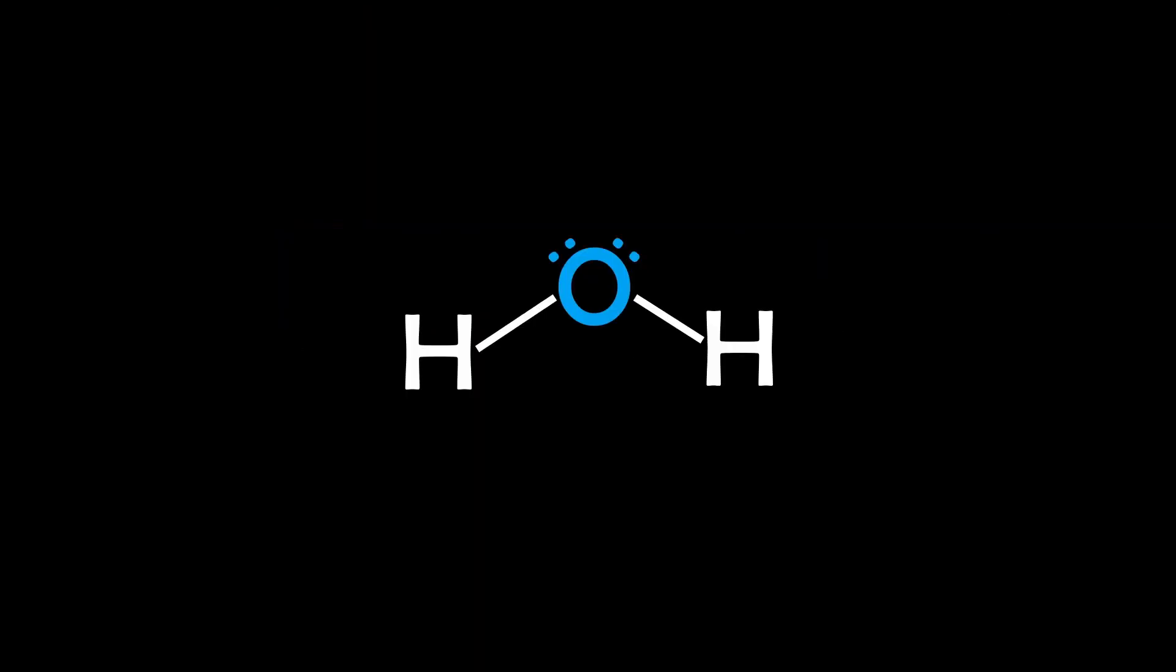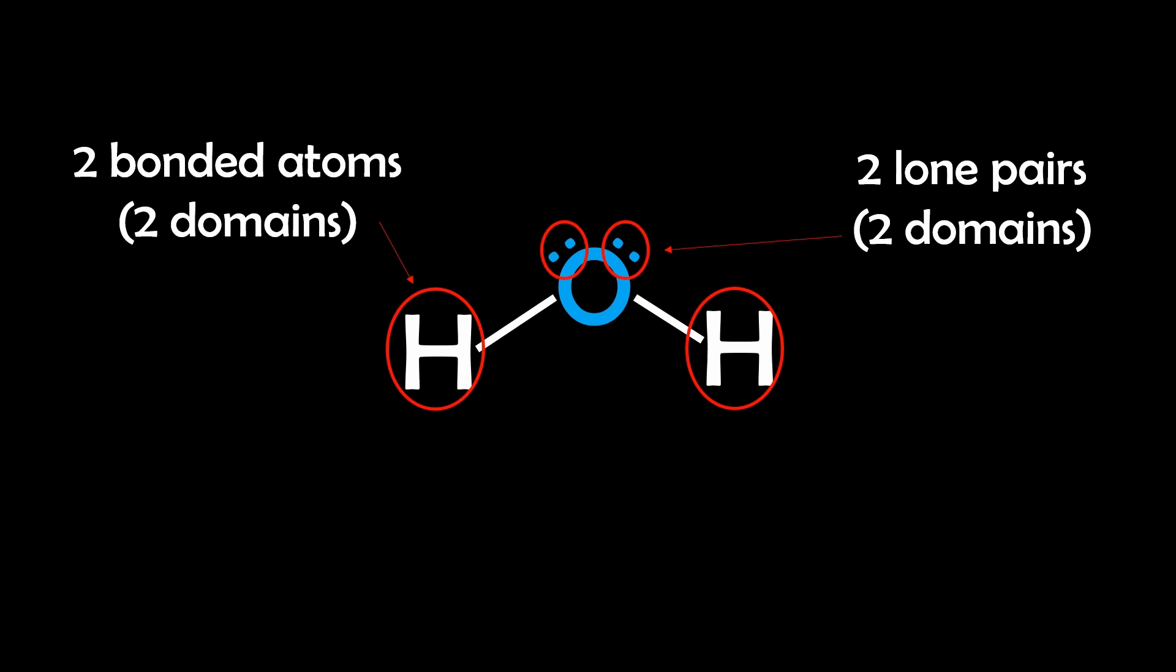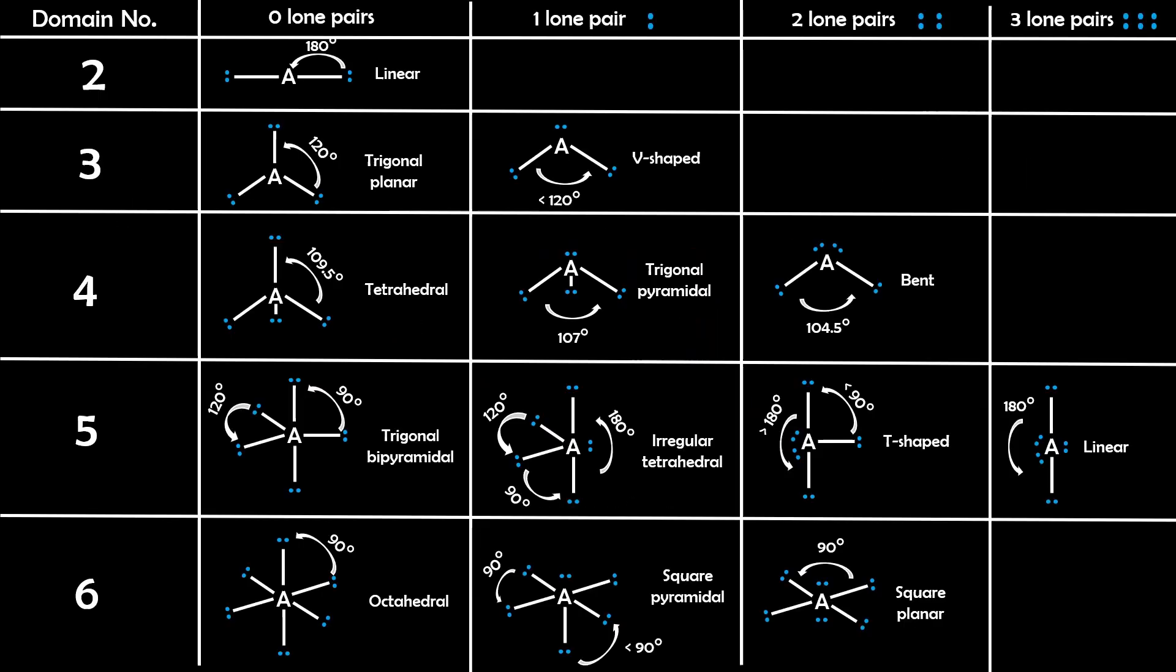Example 2: Water. Oxygen has two bonded atoms and two lone pairs. That's four electron domains. So we have four, but because two domains are lone pairs, the shape is bent.